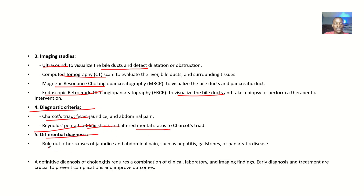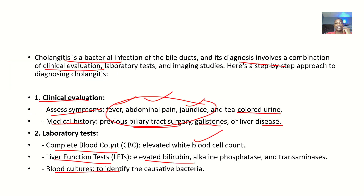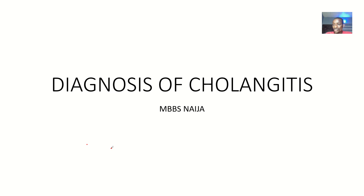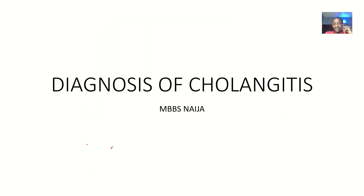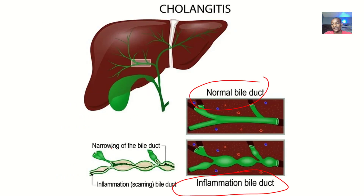For differential diagnosis, you are doing all this to rule out other causes of jaundice and abdominal pain, such as hepatitis, gallstones, or pancreatic disease. That's it about the diagnosis of cholangitis — a step-by-step approach. Bye for now.